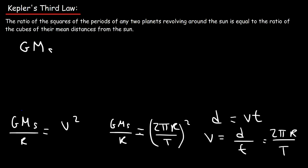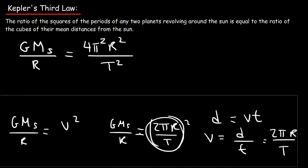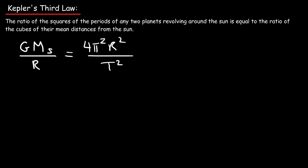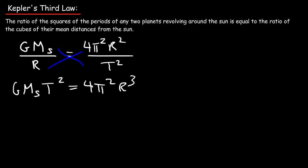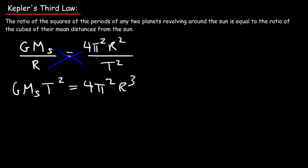Substituting, we have G·M_sun / r = 4π²r² / T². Cross-multiplying gives G·M_sun·T² = 4π²r³. We'll save this equation in this form — it'll be useful later in the video.